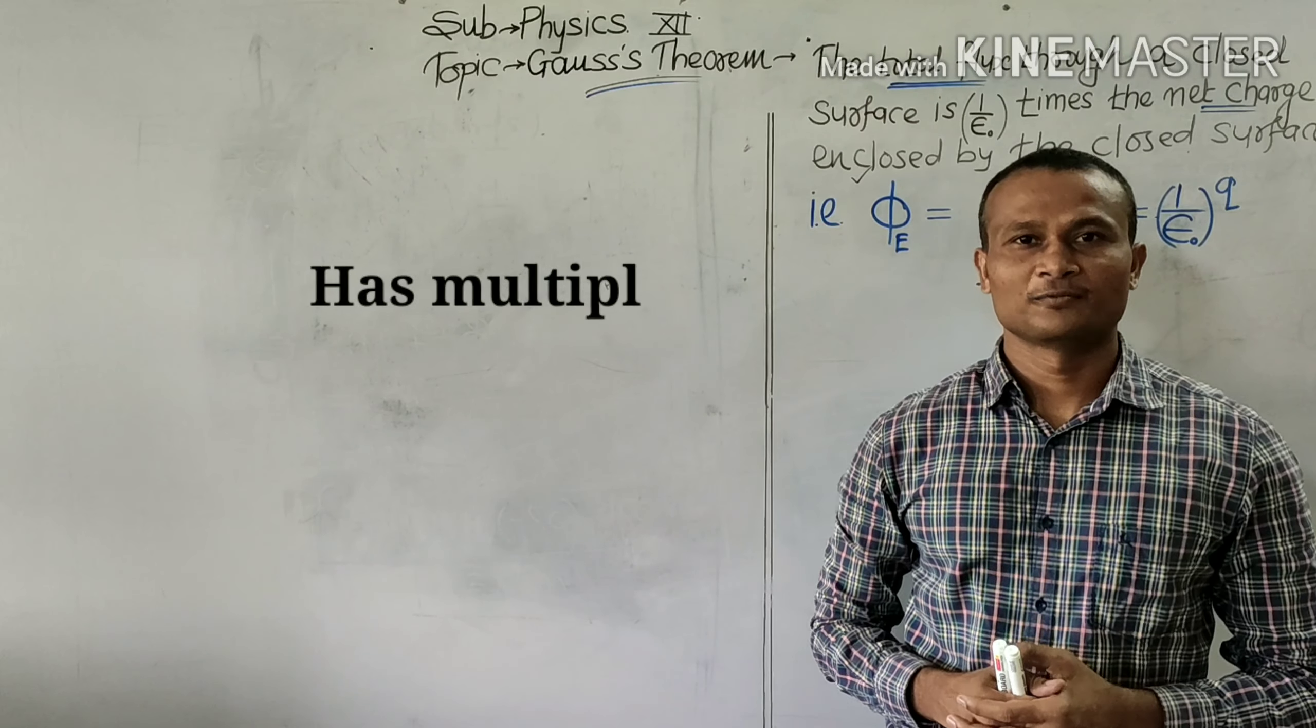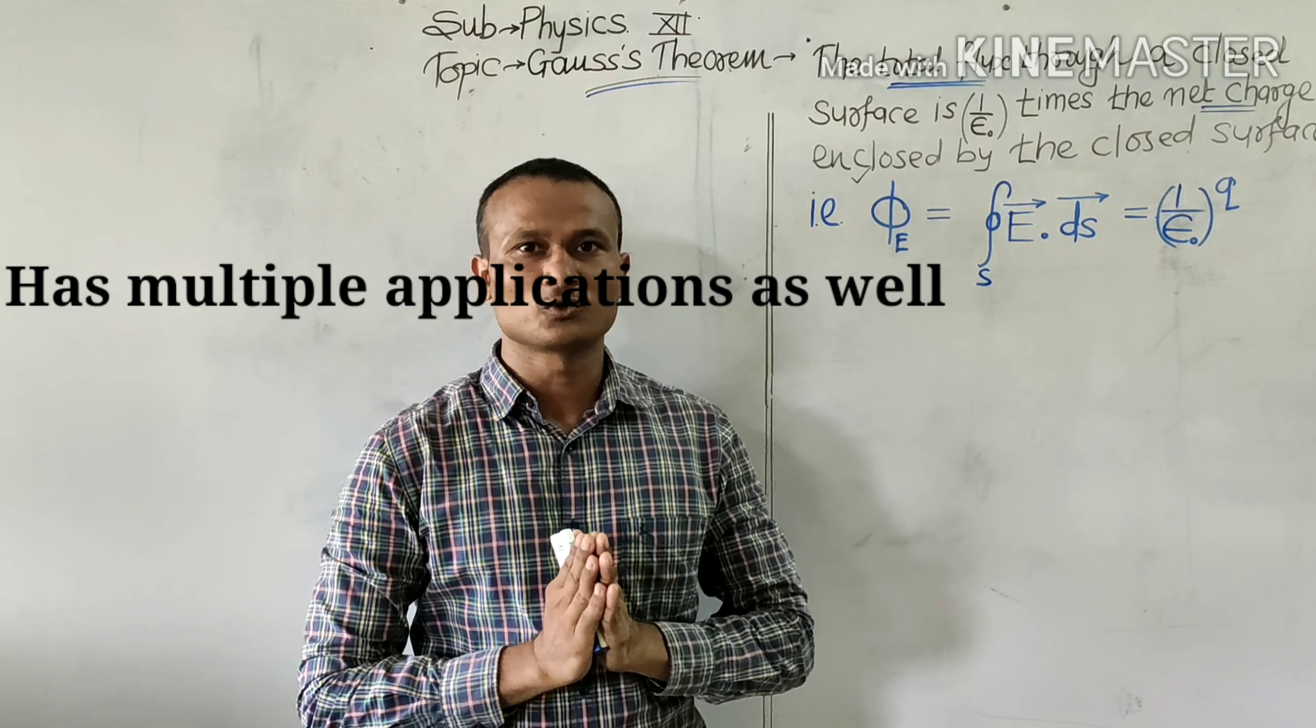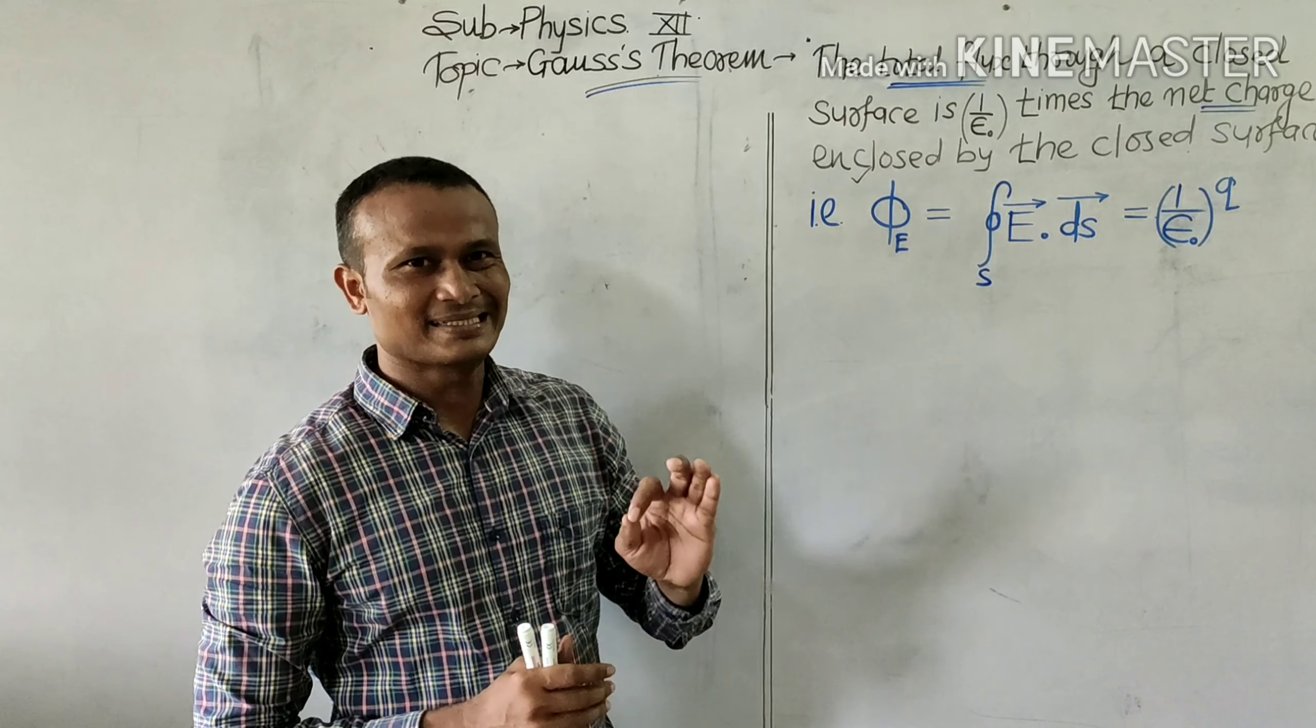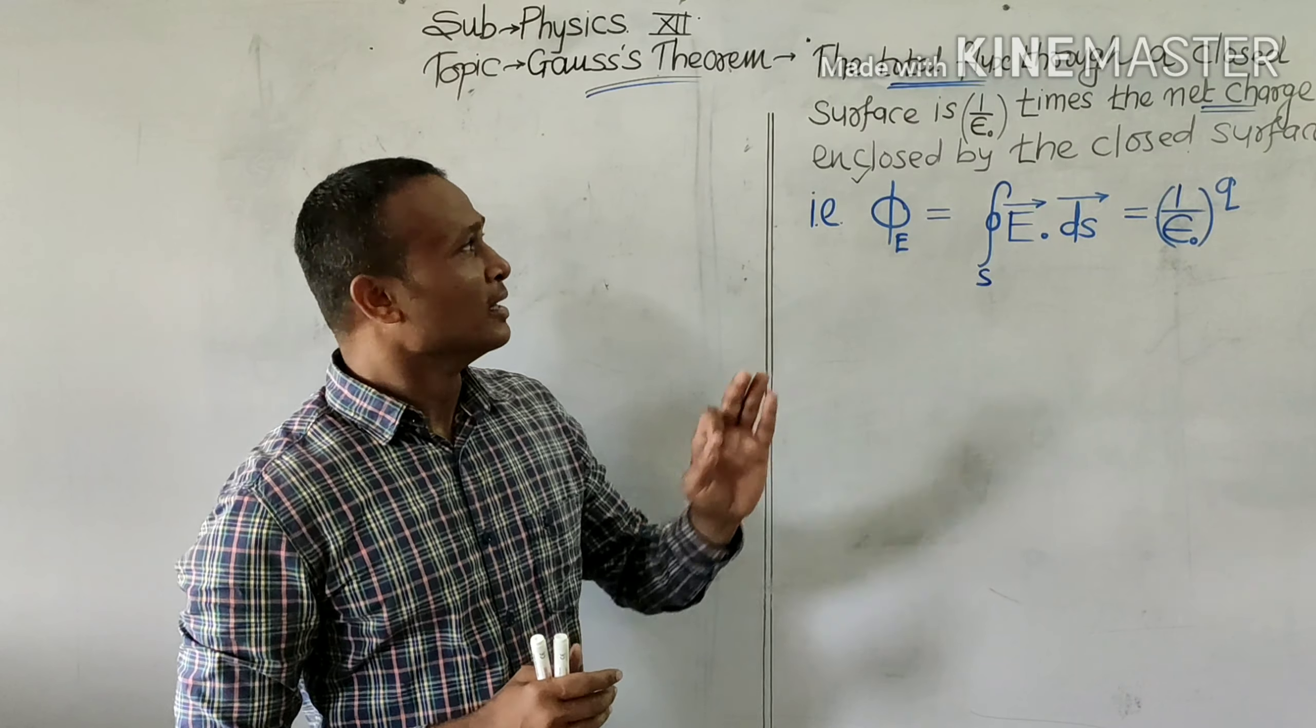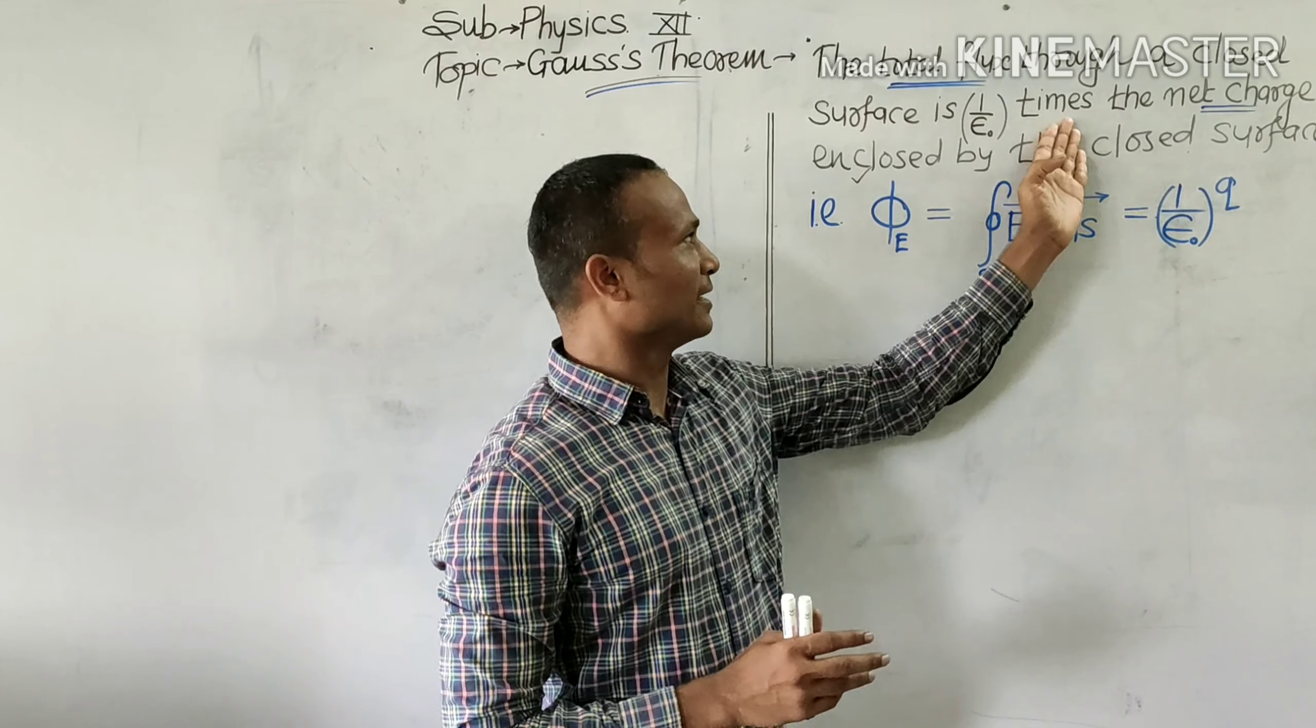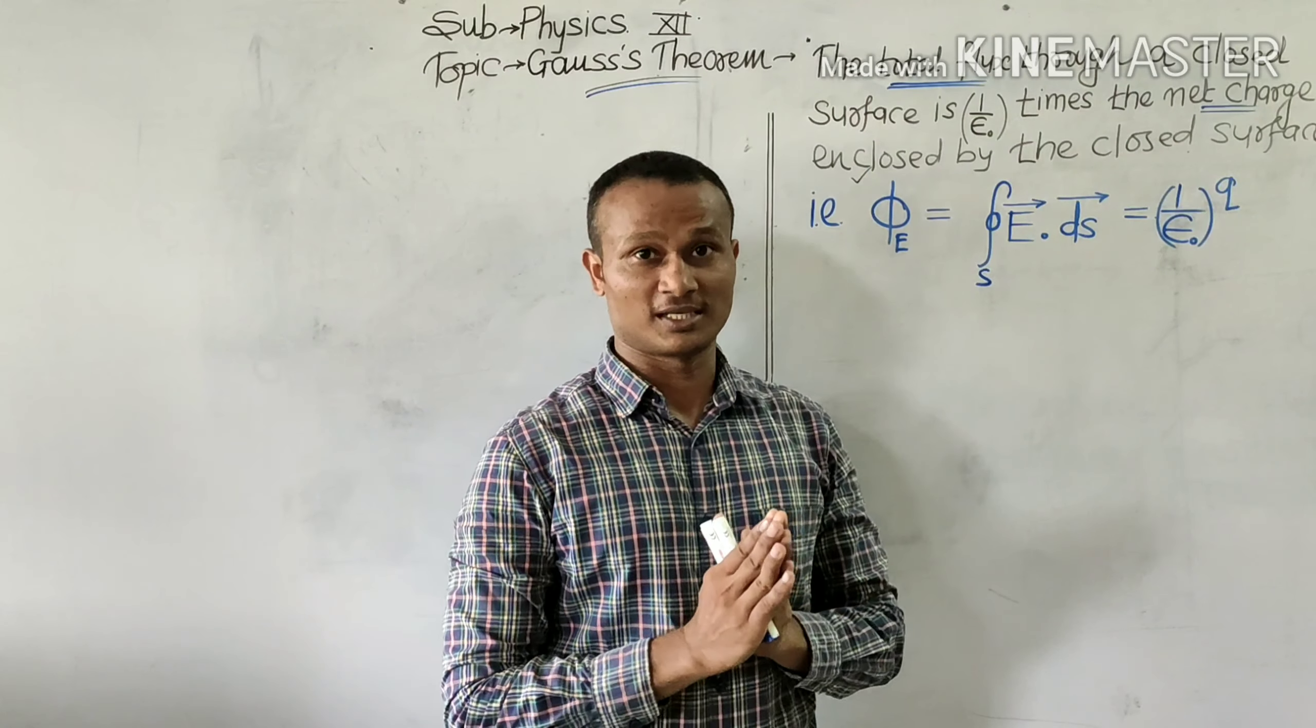Let us state Gauss's theorem. Gauss's theorem is a very fundamental law in electrostatics. The law states that the total flux through a closed surface is 1 by epsilon naught times the net charge enclosed by that closed surface.